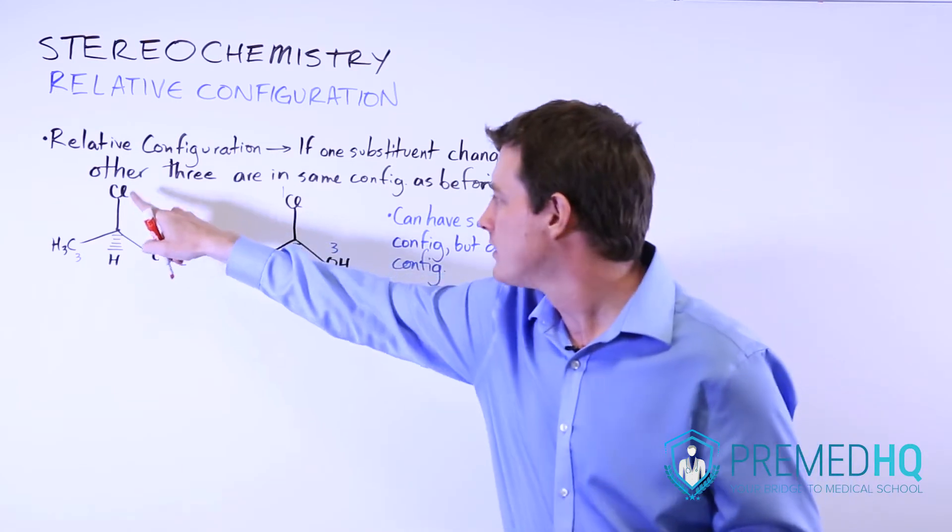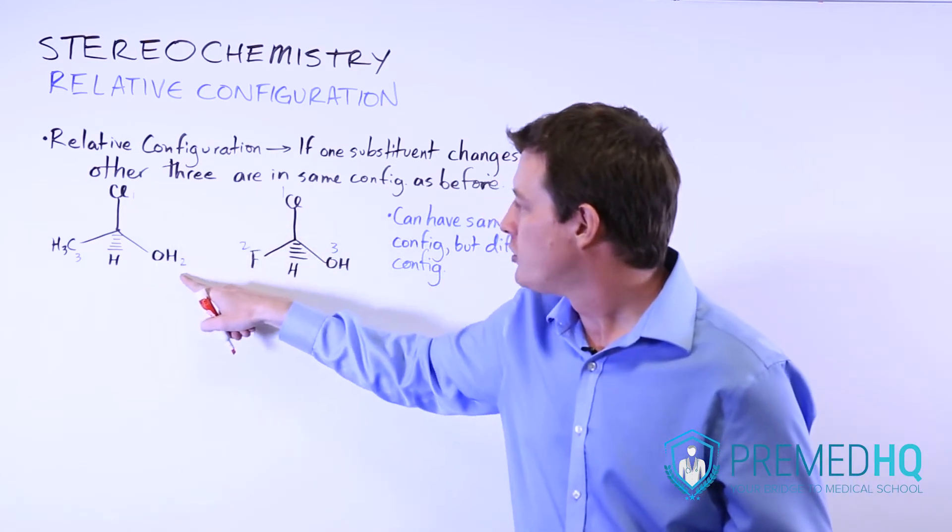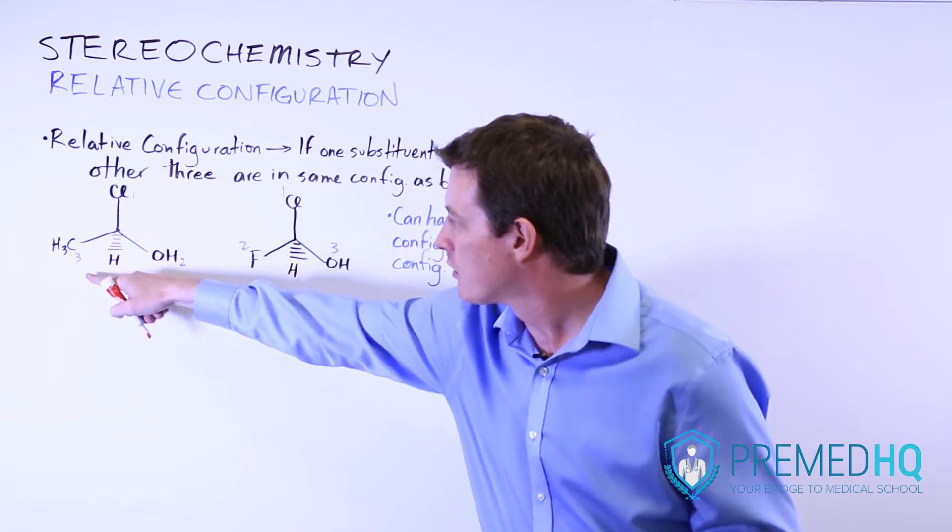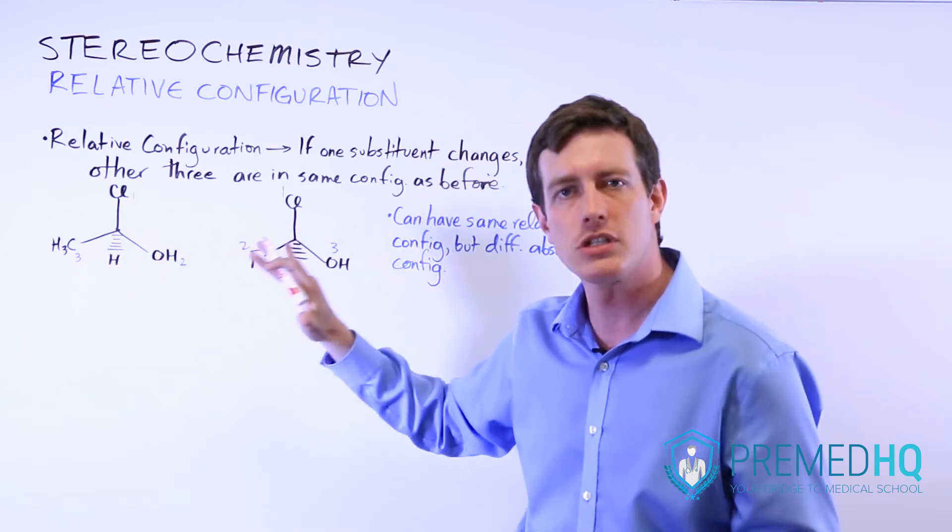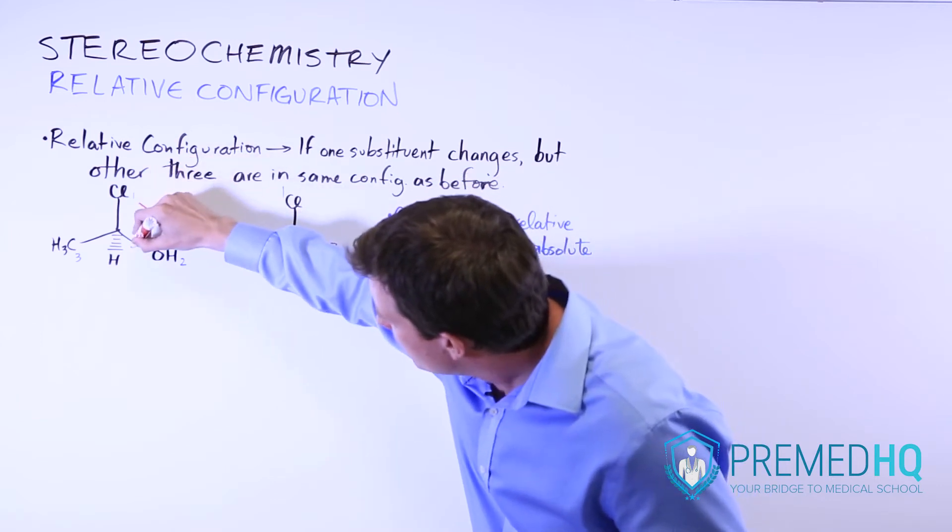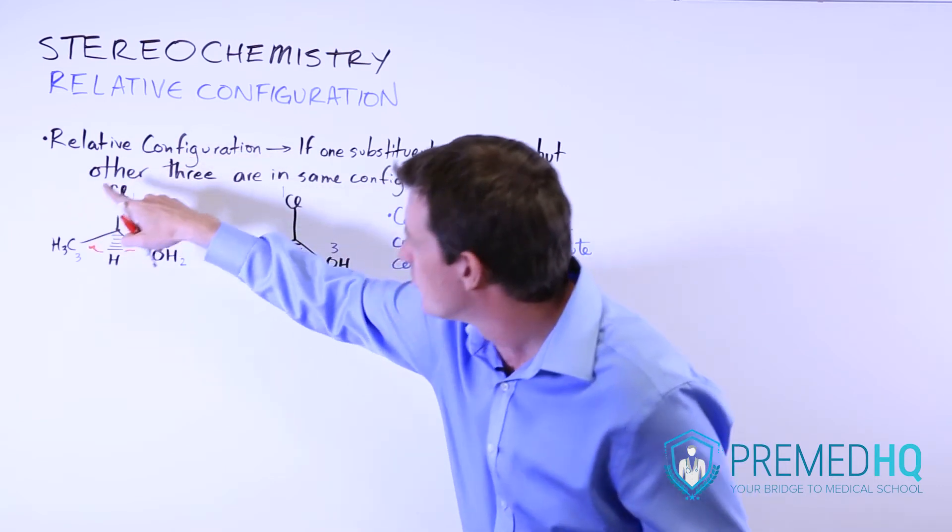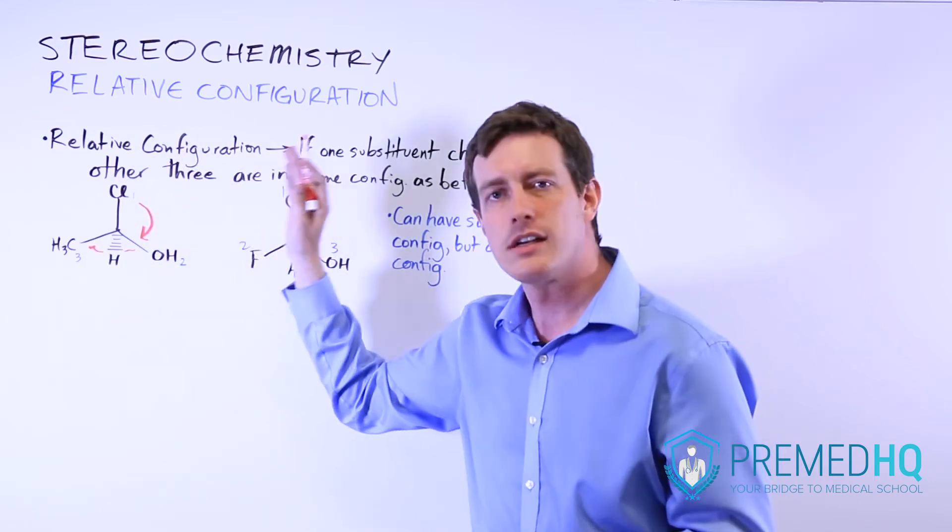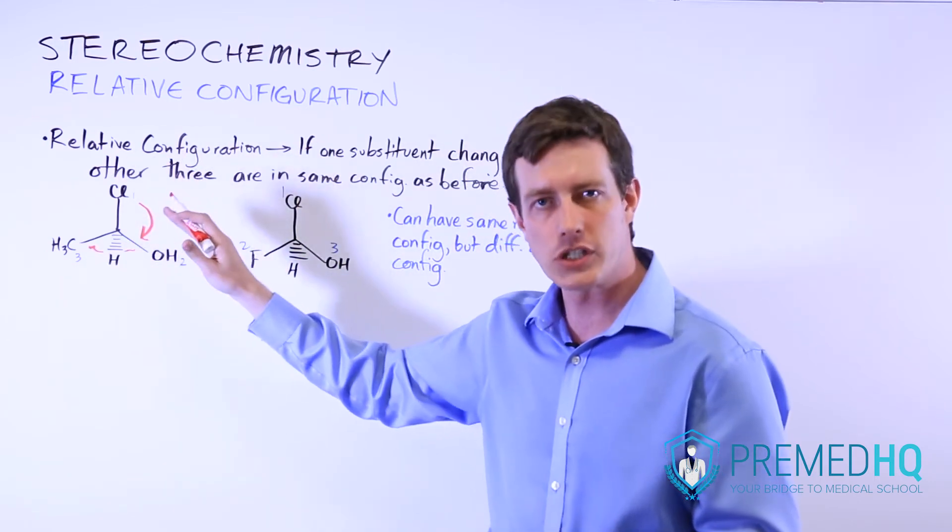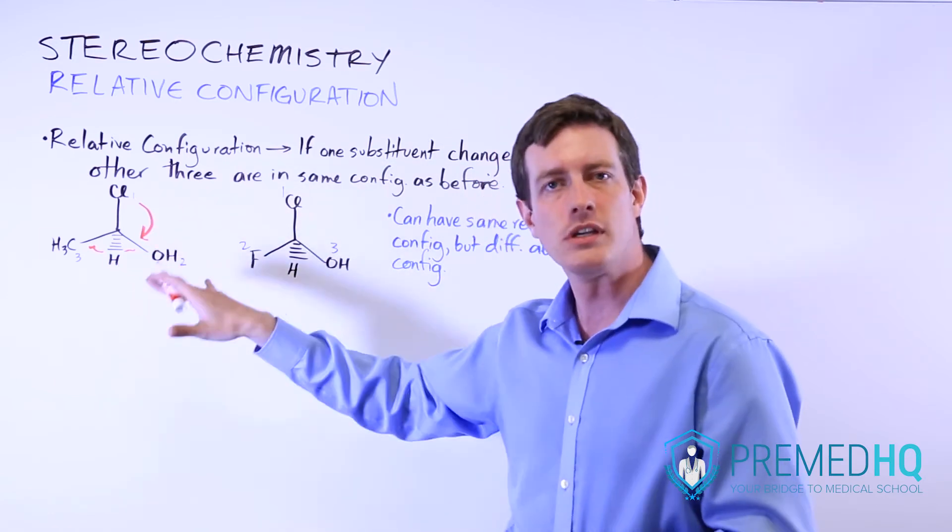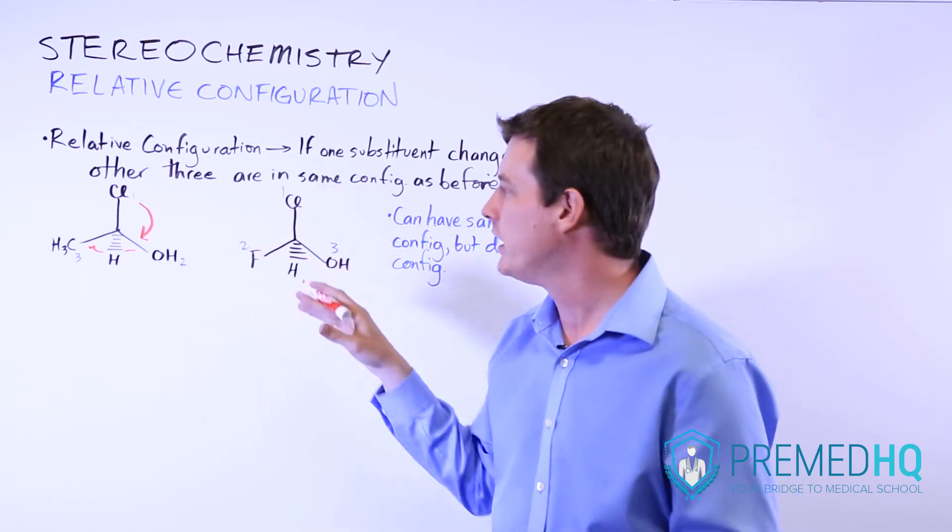And so here the chlorine is number one, the hydroxyl group is two, and the methyl group here is priority three. And remember that because the hydrogen is facing away from us, we can just say that if this moves in a clockwise direction from one to two to three, that this is clockwise and therefore it is R configuration. R and clockwise are the same when the hydrogen or the lowest substituent is facing away from you into the page.